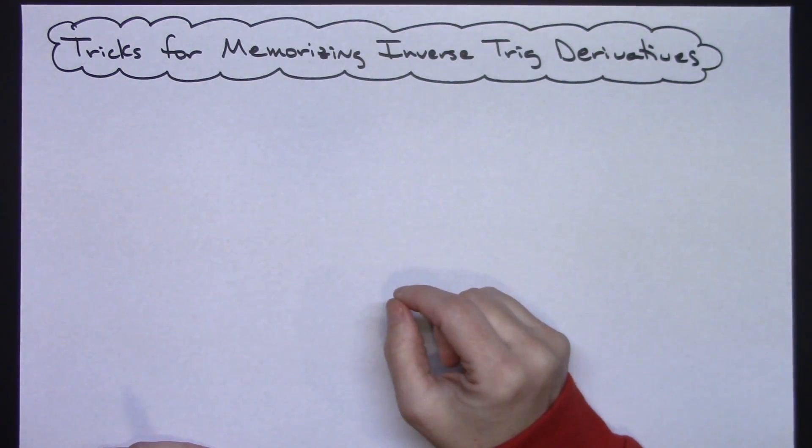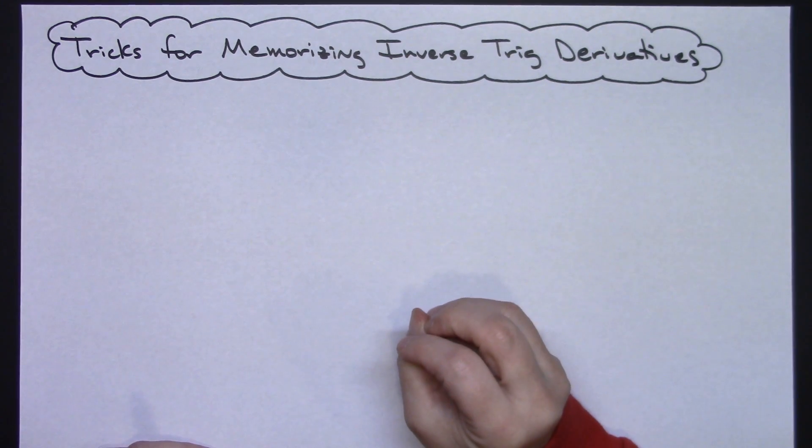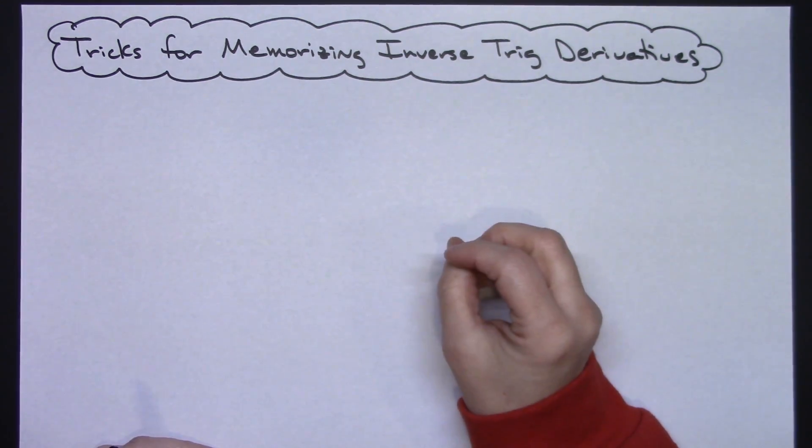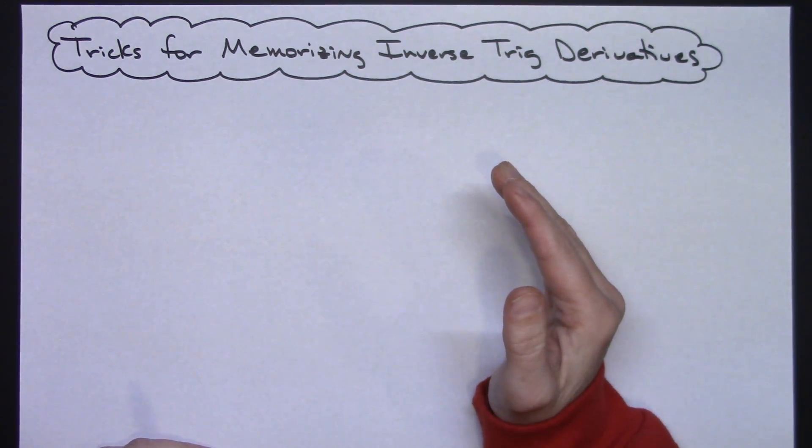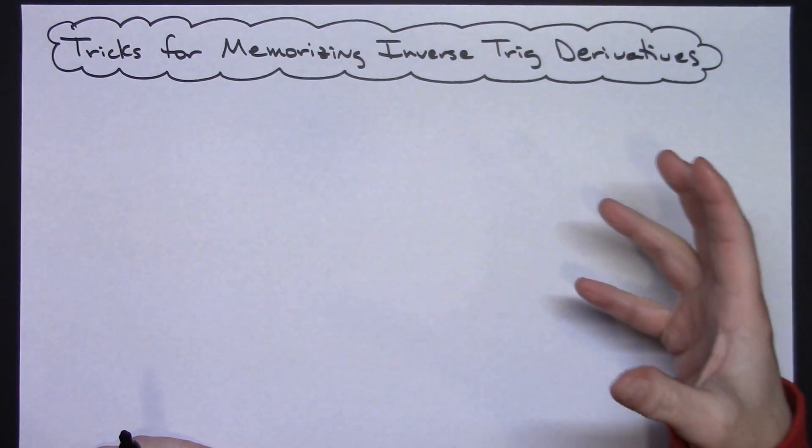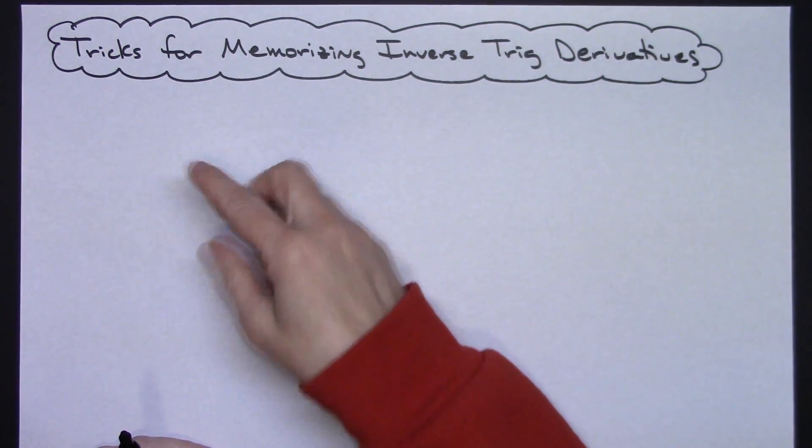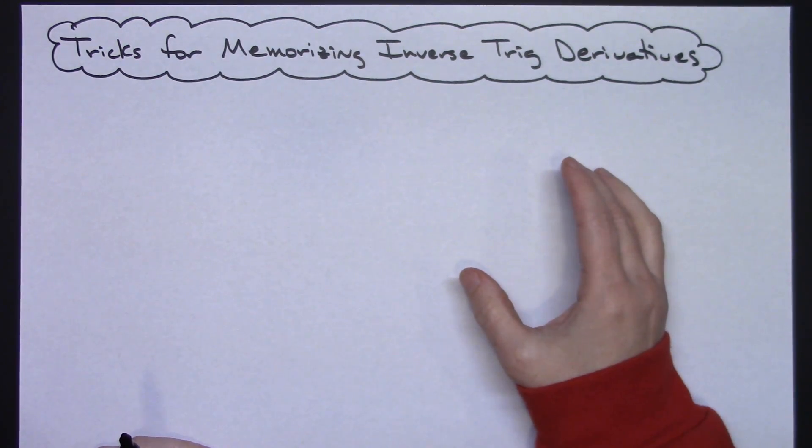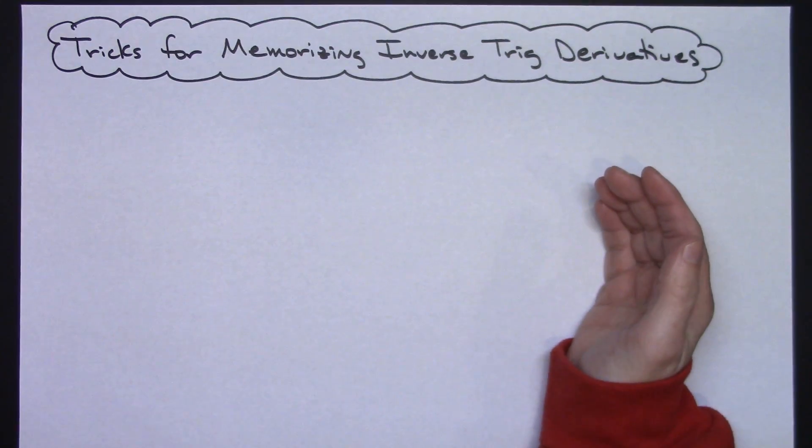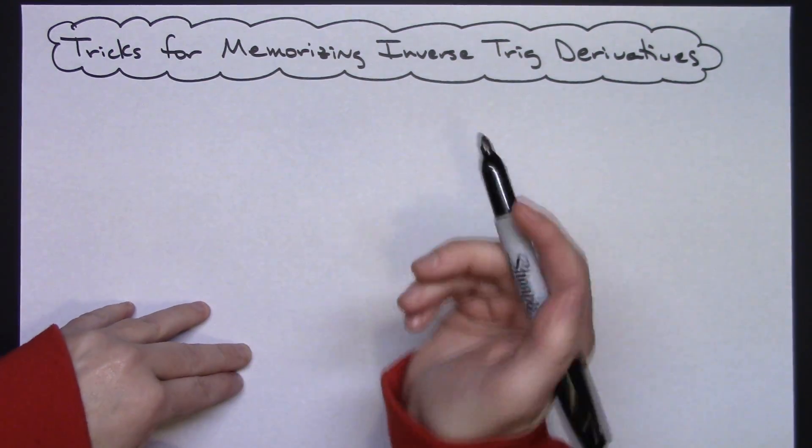In this video I'm going to go through some tricks for helping you to memorize your inverse trig derivatives. There are only six of them that you have to memorize. As opposed to maybe a specific chart or something that you've got to memorize, I would probably memorize how I could quickly write them down on a test and then use that to refer back to on a test. That would probably be about the best way to do this.